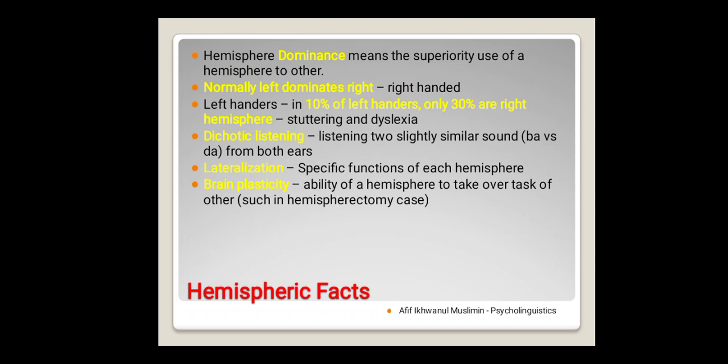But normally about 90 percent of the people in this world are right-handed, so it means that their left hemisphere dominates. But there are also left-handers, which is about 10 percent of the people in this world. But amazingly, only 30 percent of them are right hemisphere, so the 70 percent are left hemisphere with left-hander style. It causes some problems like stuttering or delay in speaking, and also dyslexia or inability to read the text.